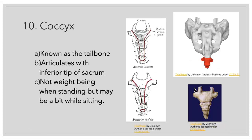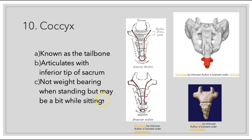Lastly, we have our coccyx, known as our tailbone. It is at the very end of the sacrum and consists of four fused vertebrae typically, but it can range from three to five. This is non-weight bearing, but it may be weight bearing while we are sitting.